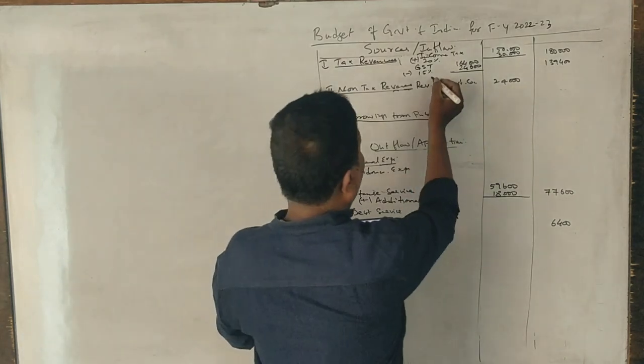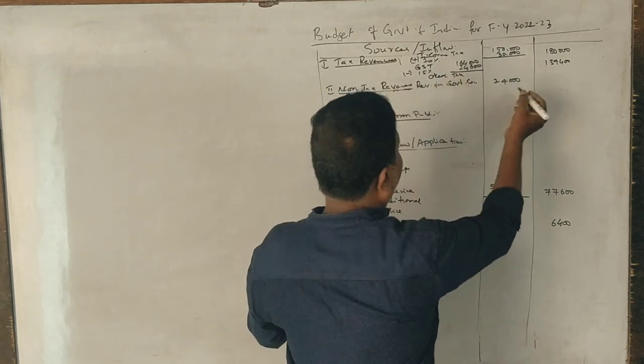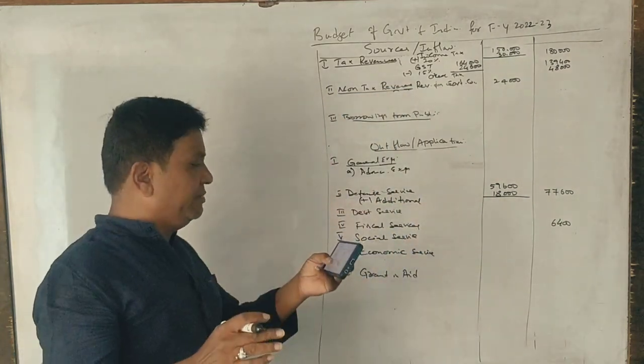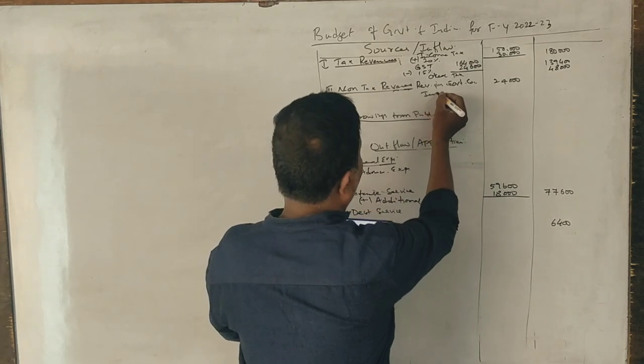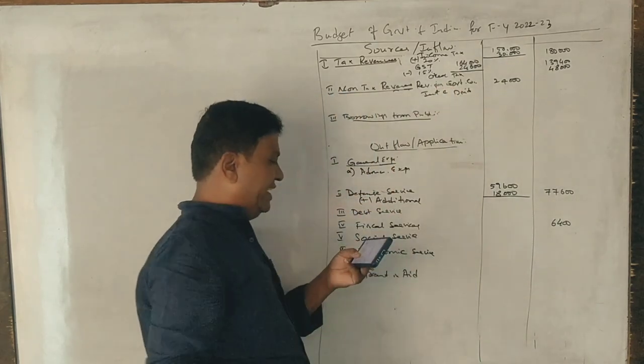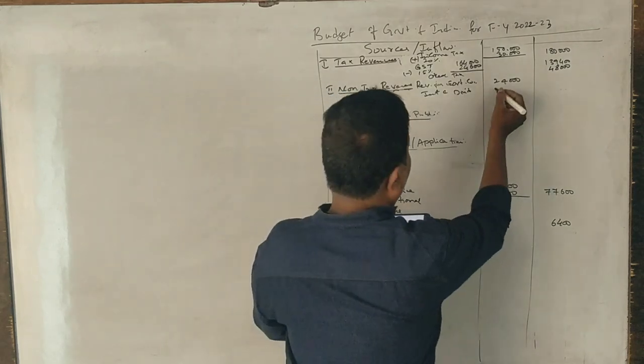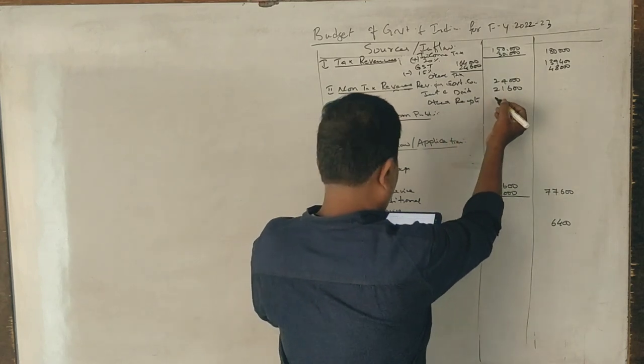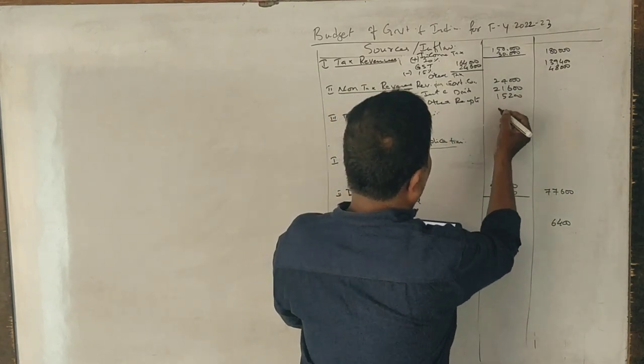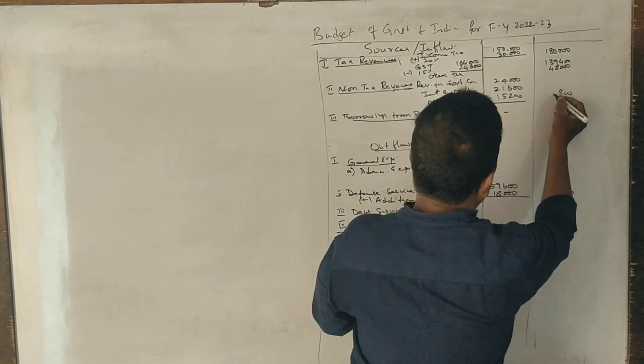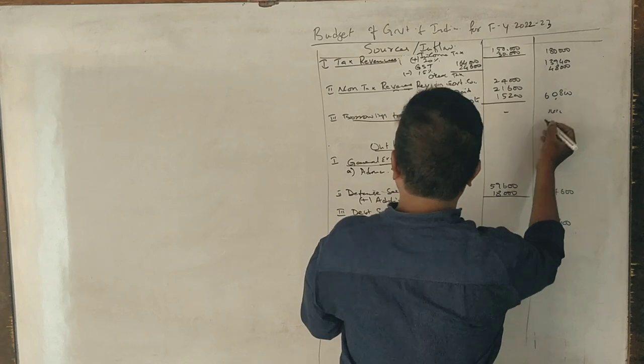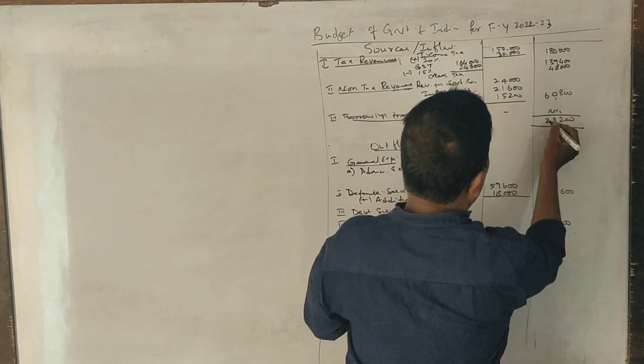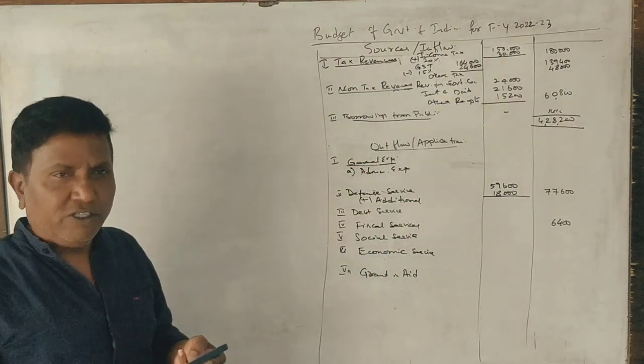Other taxes: 48,000. Revenue from government adjustments. Interest and dividends: 21,600. Non-tax revenues: 21,600. Other receipts: 15,200. Borrowings: 21,600. Total revenue is 4,28,200.